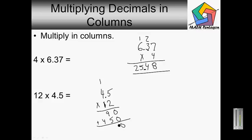So 0 plus 0 is 0. 9 plus 5 is going to give me 14. Carry the 1. 4 plus 1 is 5.